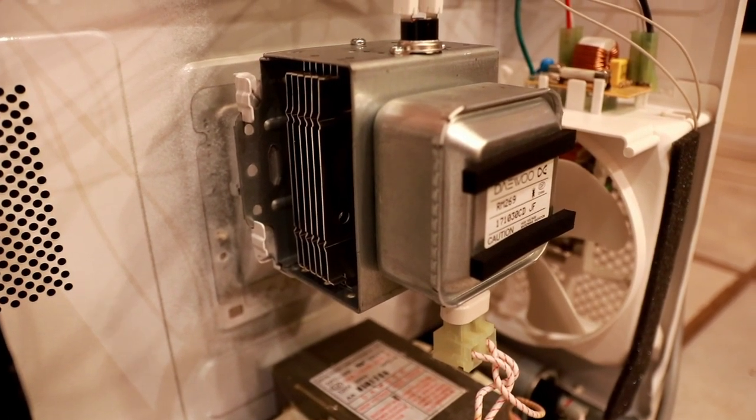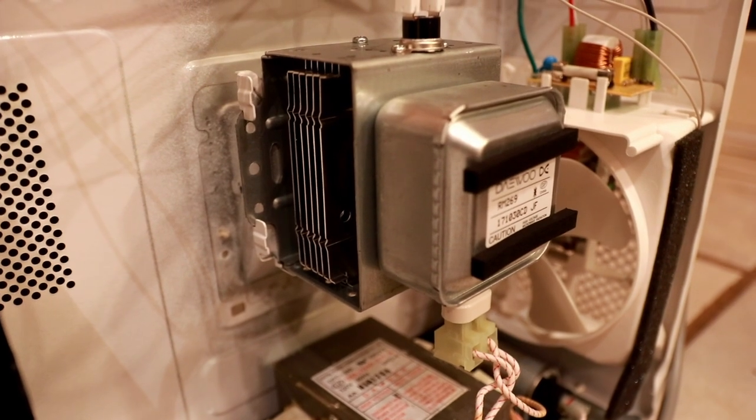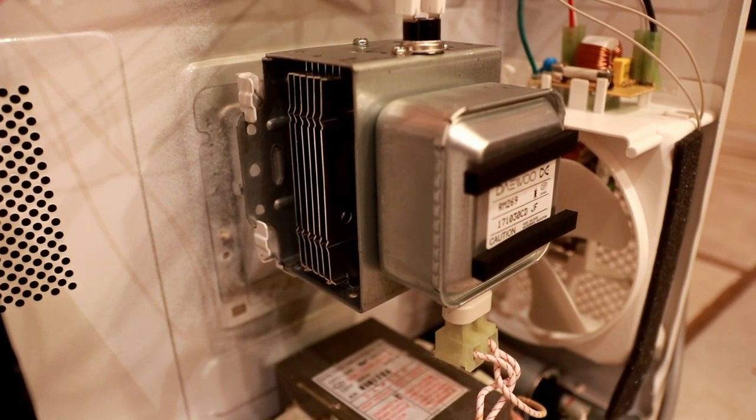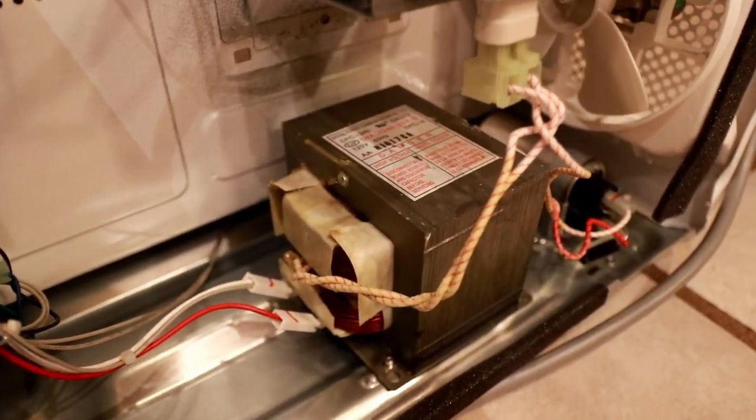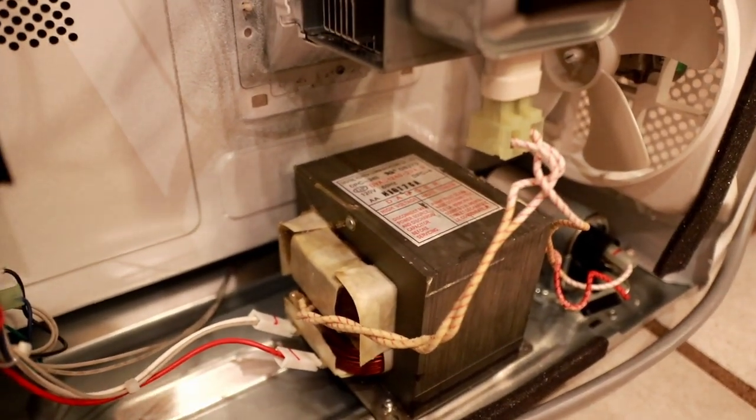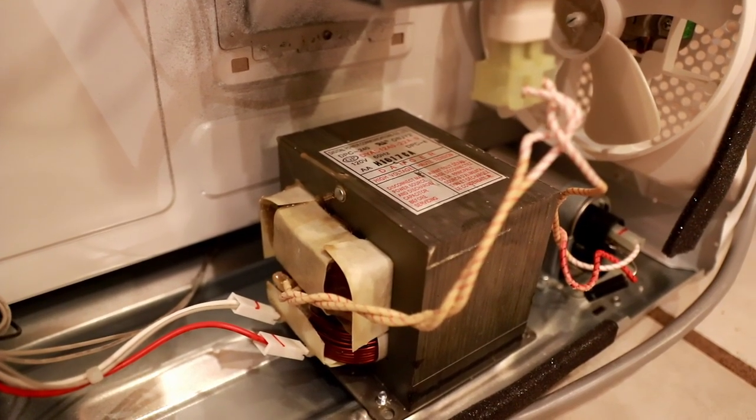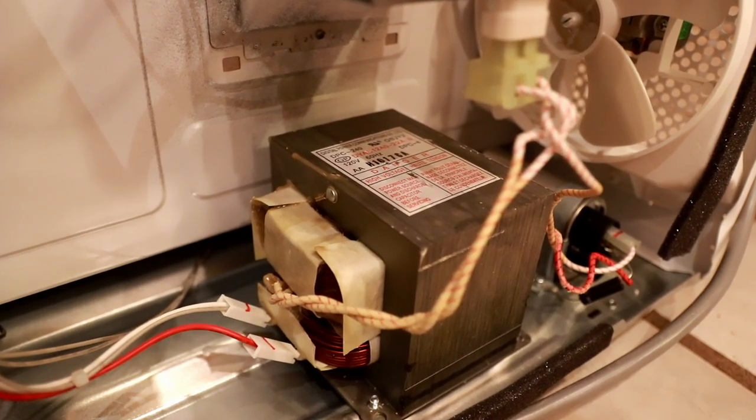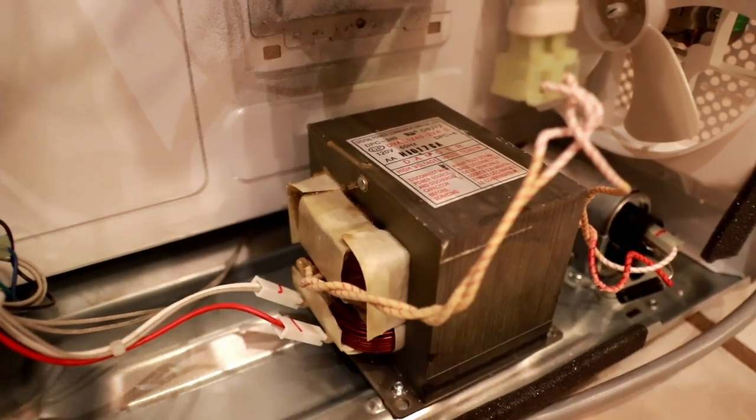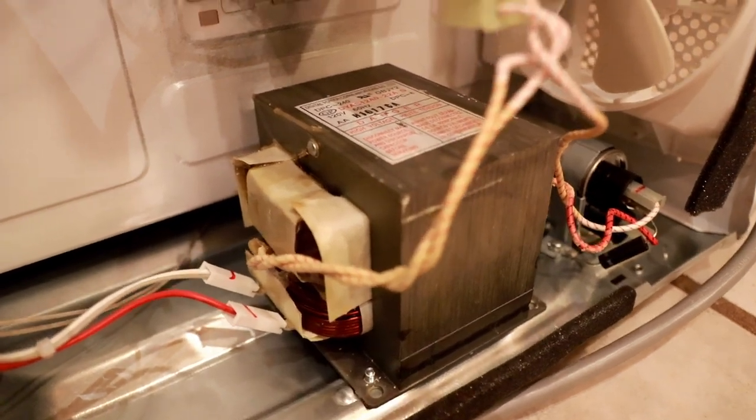Magnetrons operate at a fairly high voltage on the order of several thousand volts and to power that, that high voltage is generated using this device down here, the microwave oven transformer. This is the part that we're trying to extract. This microwave oven transformer generates a secondary voltage that's relatively high, typically in the range of two to four thousand volts AC.